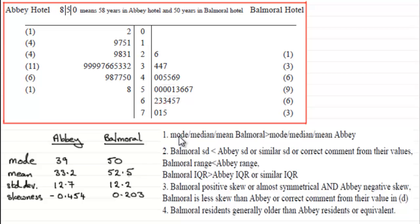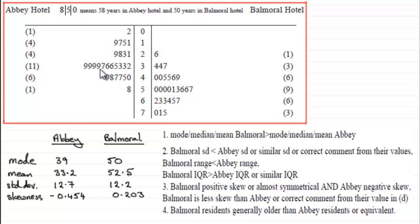So you could either say, for instance, the mode for Baumol was greater than the mode for Abby, as you can quite clearly see from here, or you could have said that the mean from Baumol was greater than the mean from Abby. You could also compare the medians, although you'd have to go and work out the median for Abby, which is going to take a bit more time, because we hadn't worked that one out.